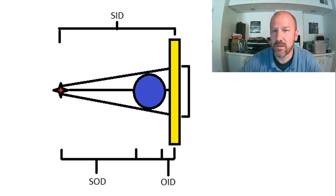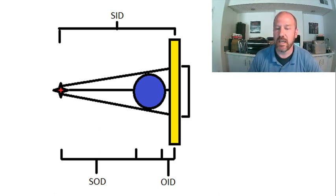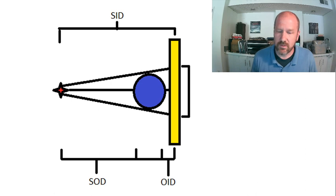The SID is that distance from where the x-rays are being produced on the anode to where the image receptor lies. And then the SOD is the distance from that point of origin for the x-rays, that point source of x-rays to the object, in this case this blue ball. And the OID is that distance from the blue ball to the image receptor.